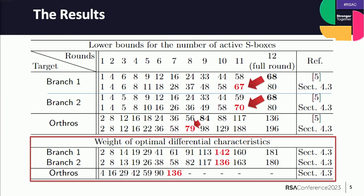We evaluated the lightweight 128-bit cipher Ultros and its internal functions, branch 1 and branch 2, using a SAT solver and presented the results in a table. We performed active S-box evaluation and determined optimal differential characteristics for each construction, updating the security boundary to 11-11-8 rounds. Our evaluation of differential characteristics for the 128 PRF with input space of 2^128 updated the security boundary to 10-10-7 rounds for each construction.